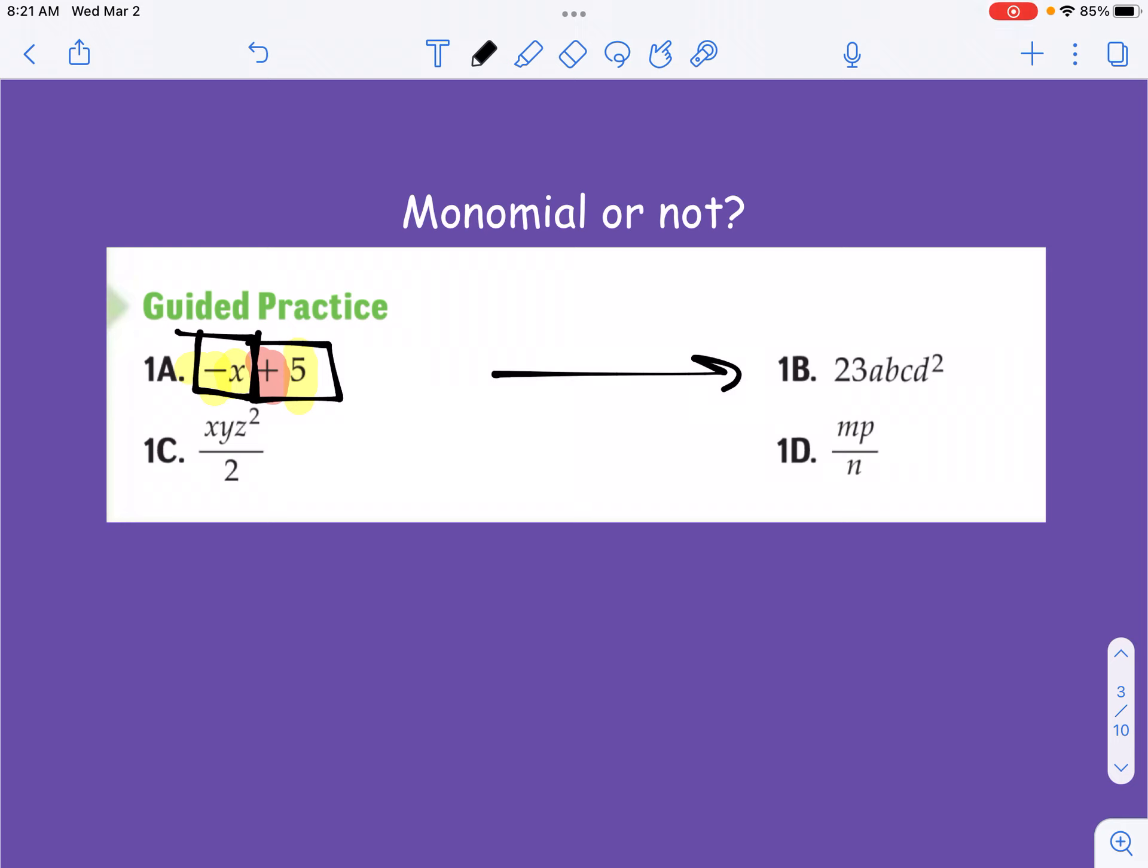All right, if we look over at 1B here, 23ABcd squared. D is the only thing that's squared, and this is absolutely okay because this is a product. This is basically 23 times A times B times C times D times D, and we rewrite that, and we'll talk about that in a minute, as D squared.